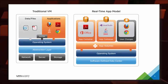For those not already familiar with App Volumes: in a traditional model, we have our network, server, storage, ESXi, and operating system — typically Windows. You have your data and files, and then applications installed directly on that system. In the real-time app model, we add another layer of abstraction. Just like we abstracted the operating system from the hardware, now we're abstracting the applications.